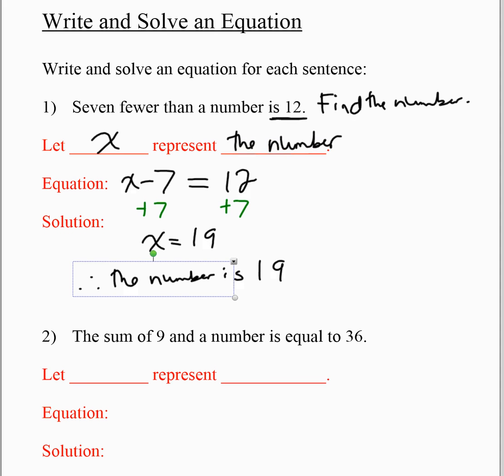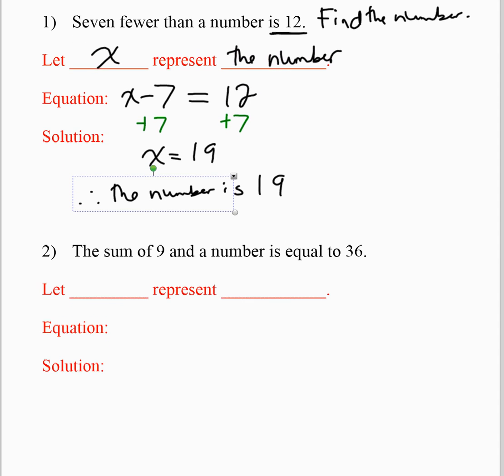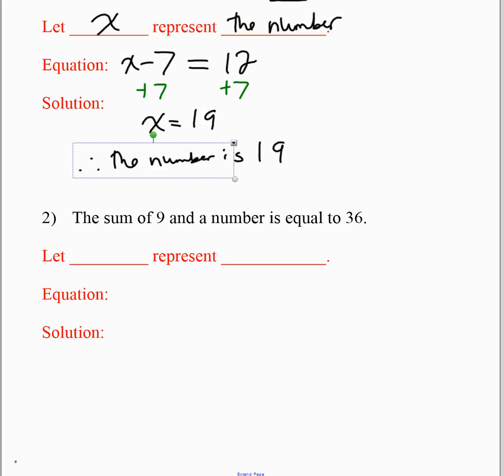So let's look at the next one. Same kind of idea. It says, the sum of nine and a number is equal to 36. Again, it should probably say, find the number.